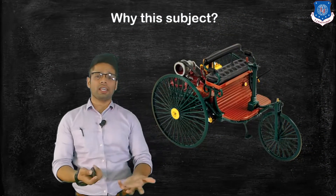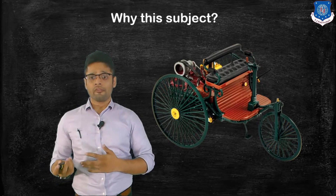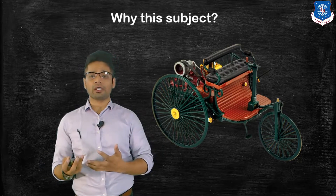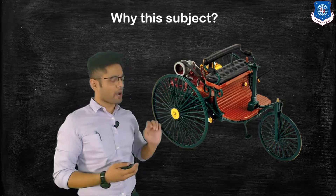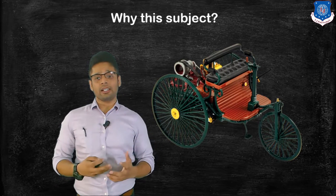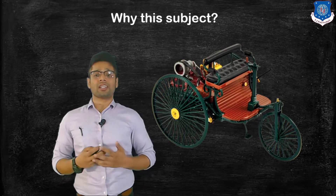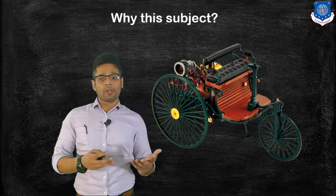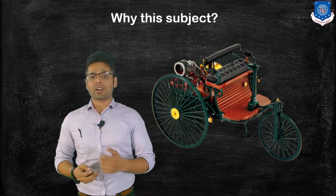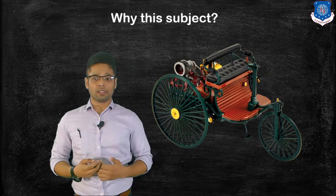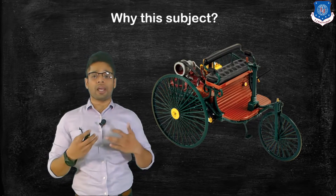Looking at the initial days of automobile, there were no electrical systems, which made it tough and complicated to operate such vehicles. For example, the first gasoline-powered automobile invented by Carl Benz in 1880, which is now known as the popular brand Mercedes Benz, looked like this. Imagine driving such a car in today's lifestyle where everything is available at the ease of just a press of a button.